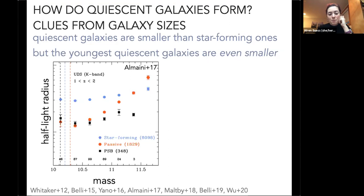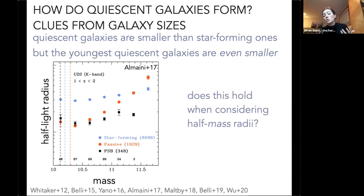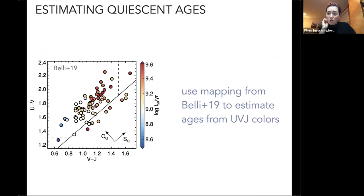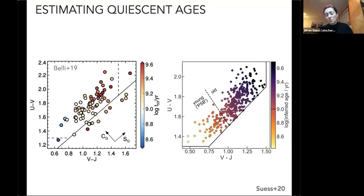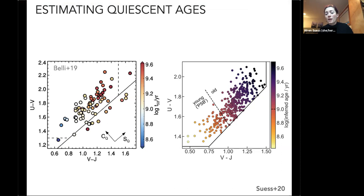This tells us that something about the quenching process potentially really shrunk these galaxies from their star-forming sizes, and then they had to grow again along the quiescent sequence. I now ask whether this result holds when considering half-mass radii. Since I don't have spectra for all of these galaxies, I need a good way to estimate ages along the quiescent sequence. I use a result from Belli et al., who found that you can estimate ages just from where galaxies lie on the UVJ color-color plot. I divide my quiescent sample into young quiescent galaxies versus older ones.